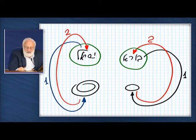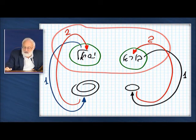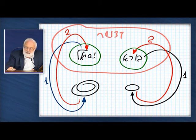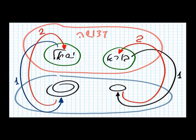The system, this system, is Kedusha, sanctity. And this system is Tuma, impurity, or Klippa, shell.